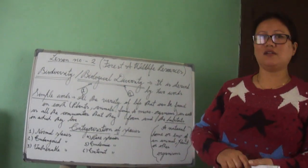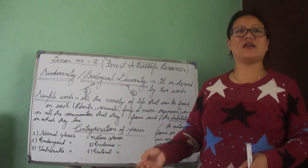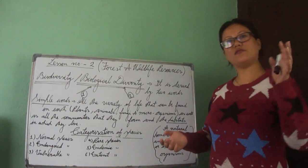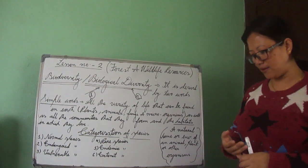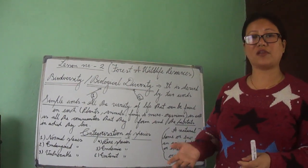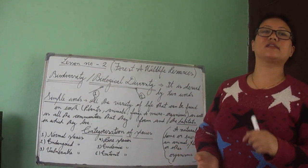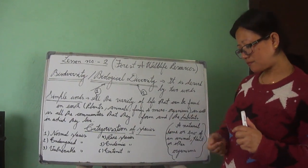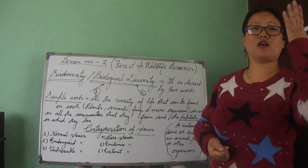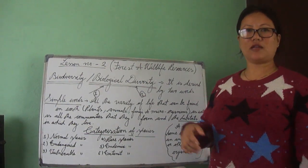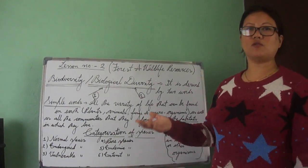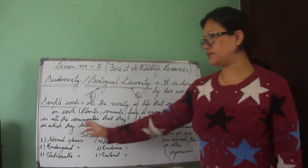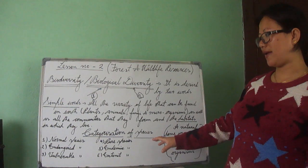The last category is Extinct Species. As the name suggests, they are no more on Earth. There was a time when we had Asiatic cheetahs — now there are none. Similarly, we had the Pink-headed Duck. And of course, we can't forget dinosaurs — we can watch them in movies, but right now there are no more dinosaurs on Earth.